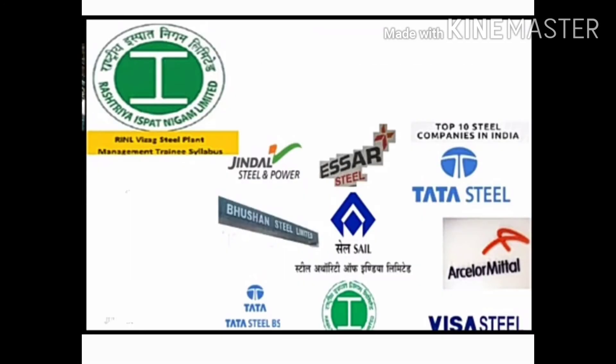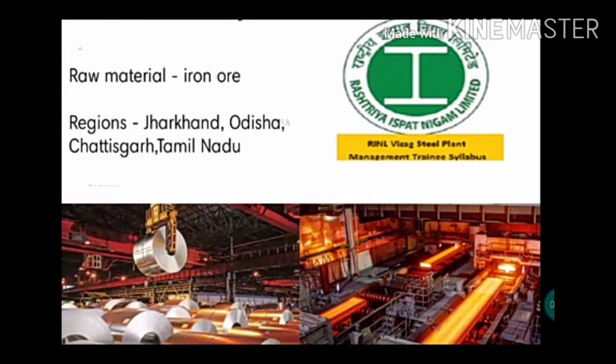The second logo is of Steel Authority of India (SAIL) — an iron and steel industry. The raw material used is iron ore. Jharkhand in the Chota Nagpur Plateau is famous for iron extraction. Iron is also extracted in Orissa and Tamil Nadu, but not on a large scale.